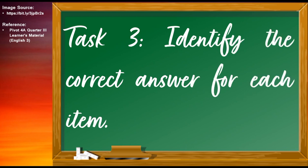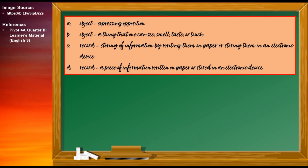For our third task, I want you to identify the correct answer for each item. The choices are: Letter A — OBJECT, meaning expressing opposition; Letter B — OBJECT, meaning a thing that one can see, smell, taste, or touch; Letter C — RECORD, meaning storing of information by writing on paper or in an electronic device.